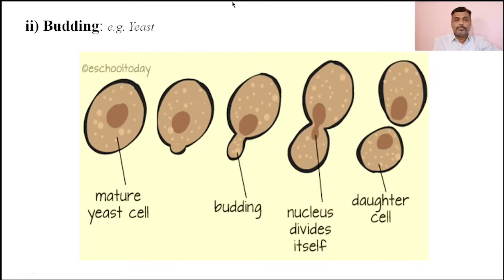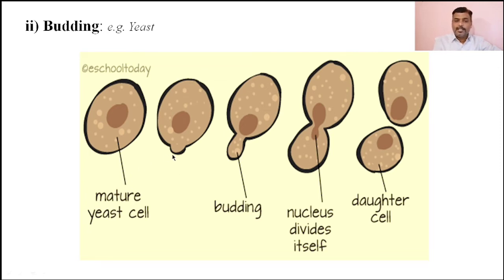The second method of asexual reproduction is known as budding, carried out in organisms like yeast, Paramecium, etc. This process is generally carried out in unicellular organisms. This is the mature yeast cell. At the time of budding, small outgrowths start to develop on the same cell of the unicellular organism. These outgrowths developing on the parent cell are known as buds. Each bud develops into a daughter cell — that process is known as budding.